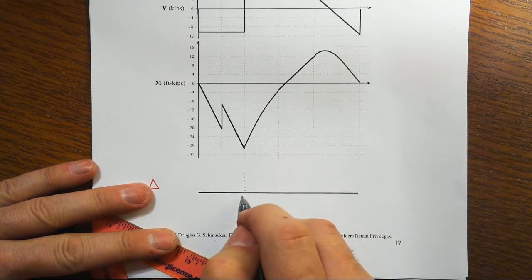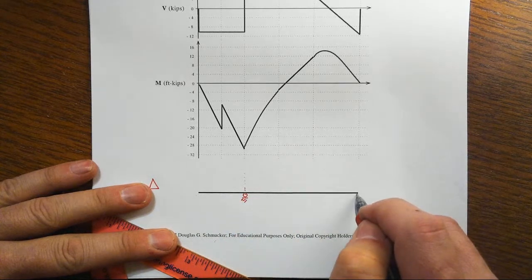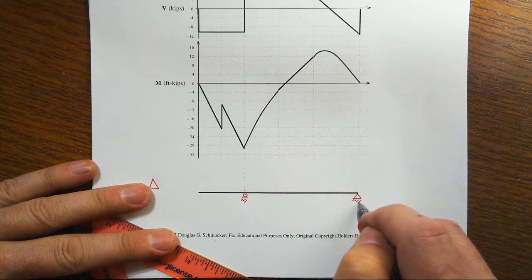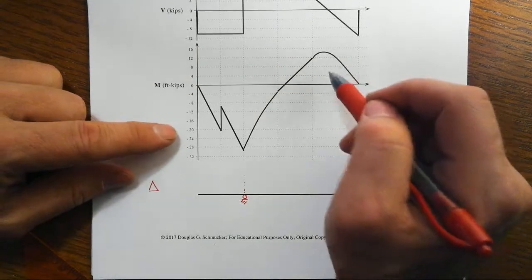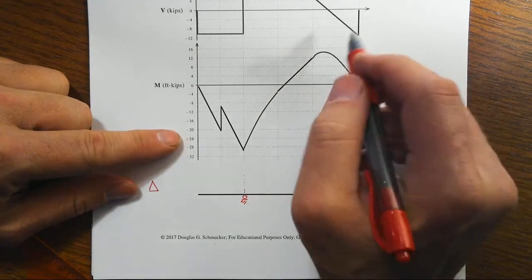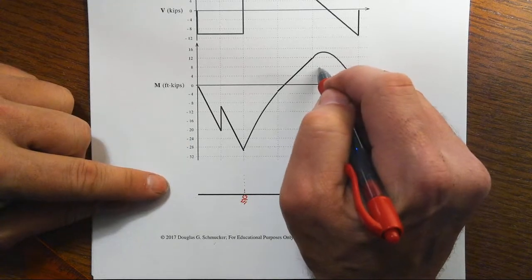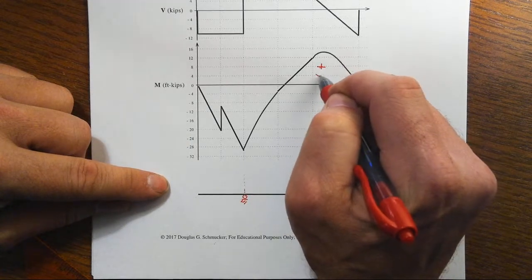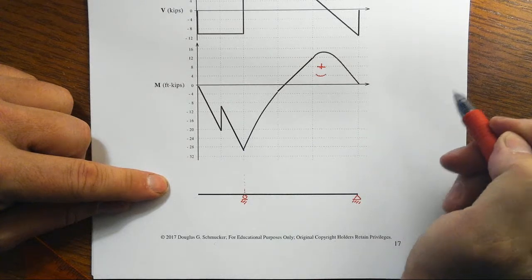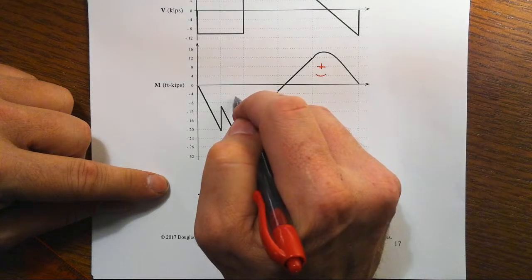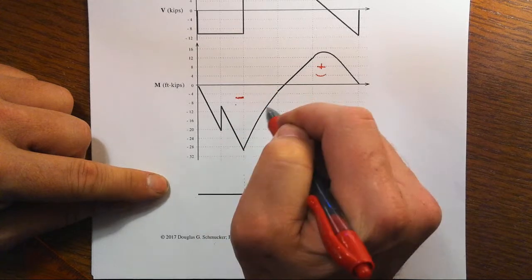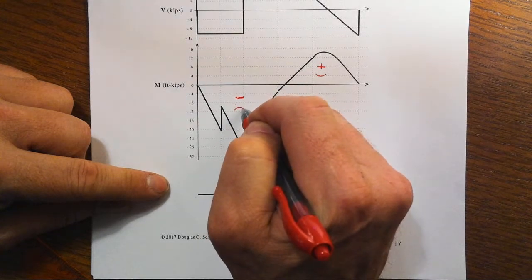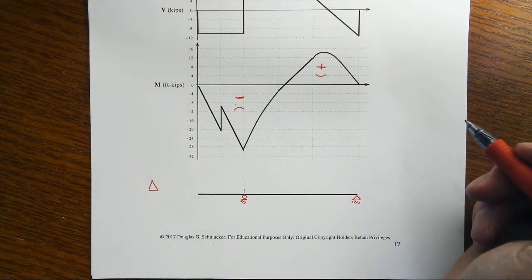Right at this big negative moment is where we had our roller support. At the far right we have our pin support. Looking at this from a moment-curvature standpoint, I've got positive moment to the right, and that's going to mean some form of smiley face in the deflected shape — concave up. Whereas over here on the left, it's all negative moment, and we'll have a frowny face kind of curvature — concave down.